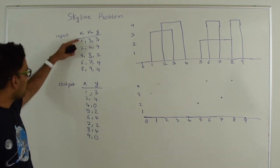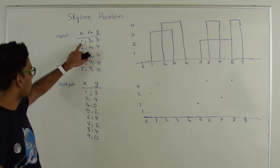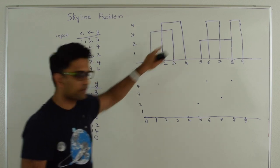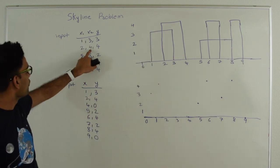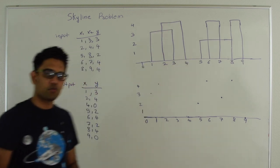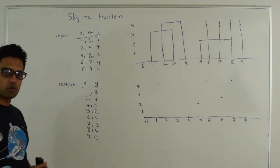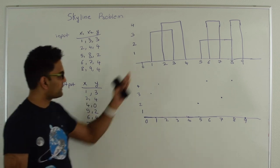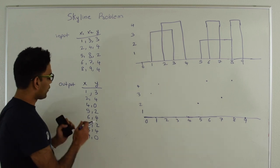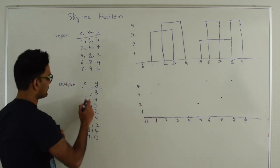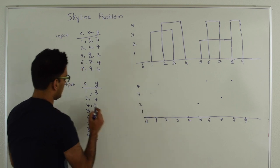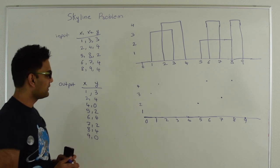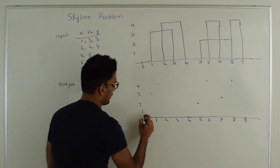In this example I have five buildings. Building 1 starts at 1, ends at 3, and the height is 3. Building 2 starts at 2, ends at 4, and height is 4, and so on. This is the output I am looking for. Let me show you how these points can form the skyline of the city. I've put these points in this graph here — 1,3 is here and 2,4 is here — and now let me show you how I can form the skyline from these points.